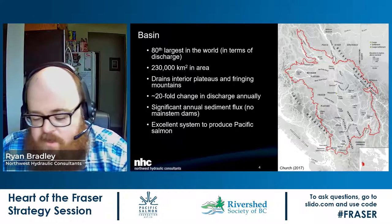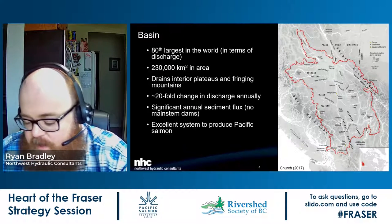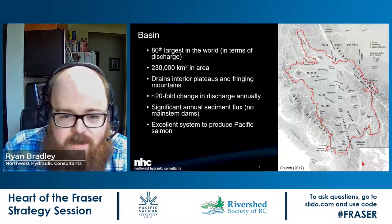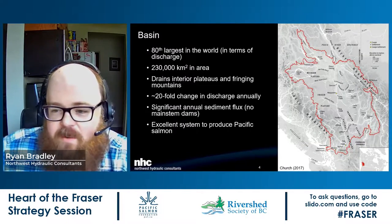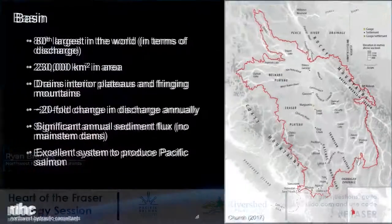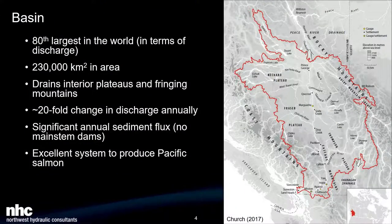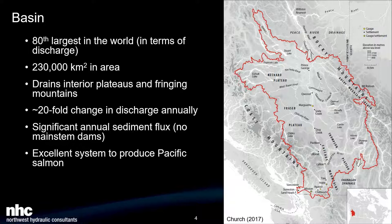I'm not a biologist — I probably should have said that right away — so my focus is going to be specifically on the physical processes happening here. The Fraser itself is the 80th largest river in the world in terms of discharge, and it drains a substantial portion of BC through the plateaus and fringing mountains.